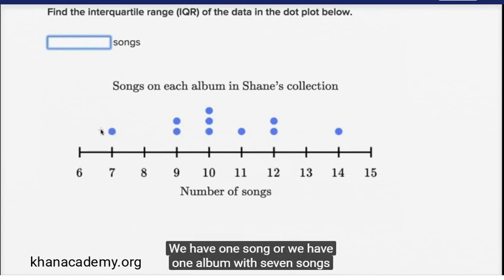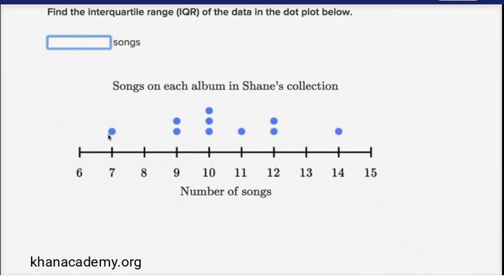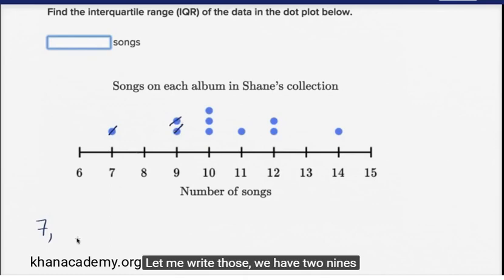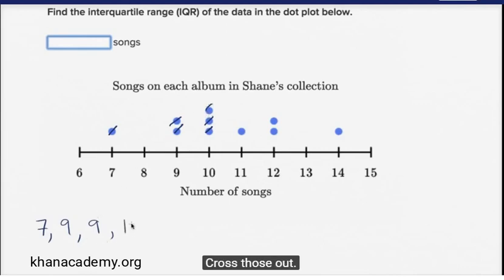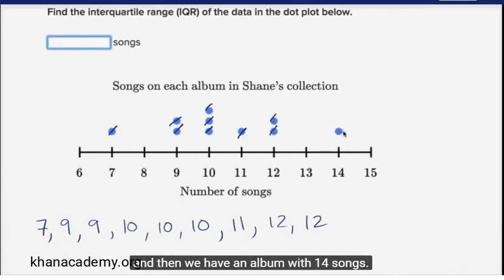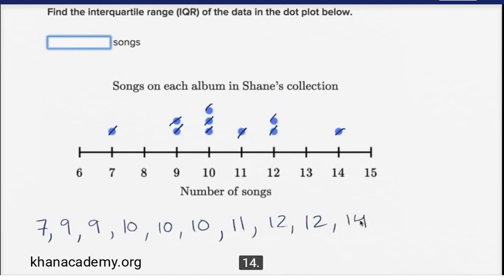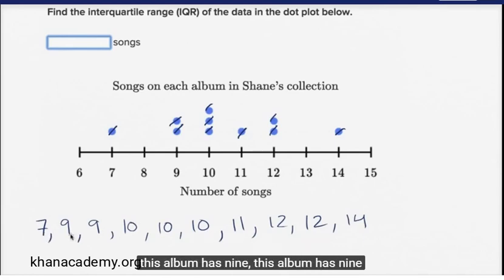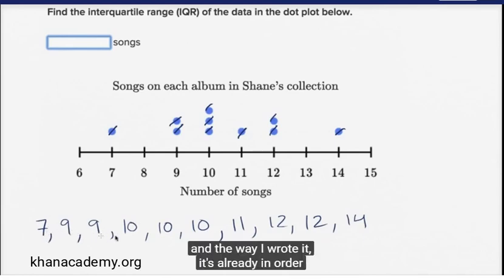We have one album with seven songs, so we have a seven. We have two albums with nine songs, so we have two nines. Then we have three tens — ten, ten, ten. Then we have an eleven, two twelves, and then finally an album with fourteen songs. So all I did here is write this data out in order — this album has seven songs, this one has nine, this one has nine. The way I wrote it, it's already in order.